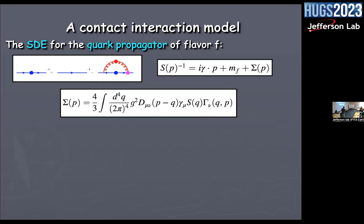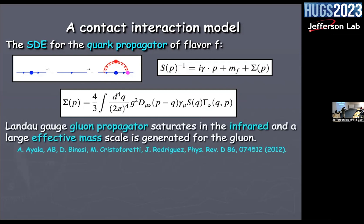The inverse propagator for the quark can be written as i-gamma-dot-p plus the fermion mass, and the self-energy is written almost exactly as in QED, except here we have the quark-gluon vertex. One interesting question: how does the gluon propagator behave in the infrared? There have been debates since about 25 years ago — people working with renormalization group equations, Schwinger-Dyson equations, and lattice calculations.